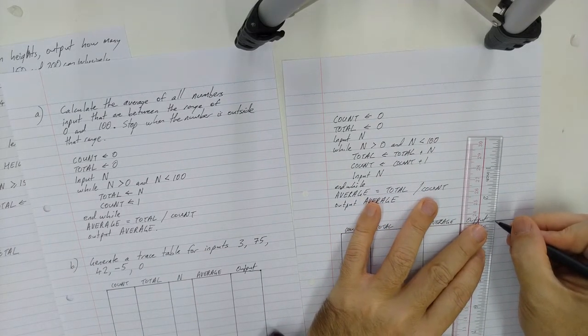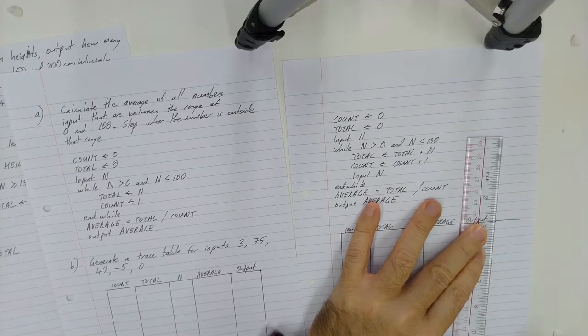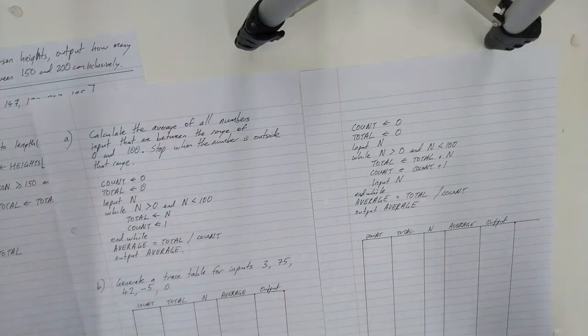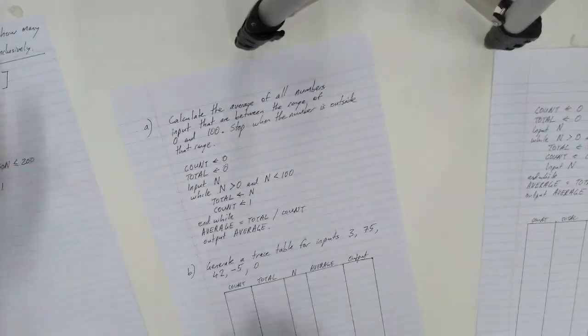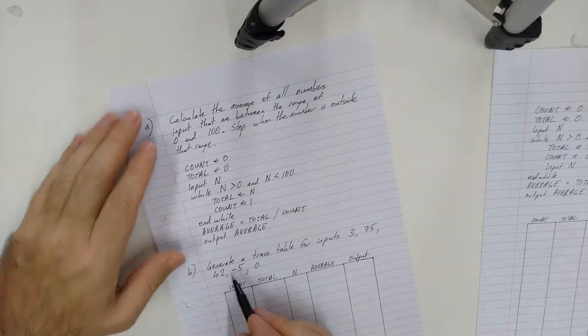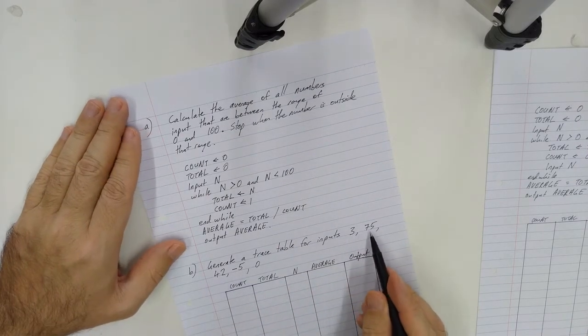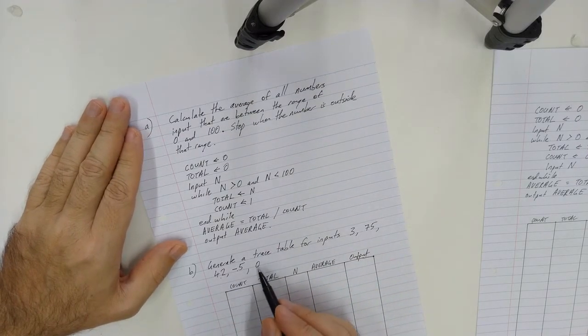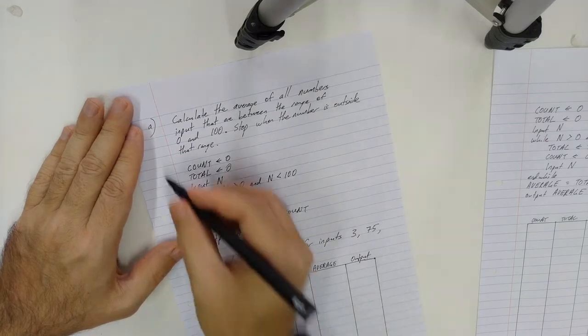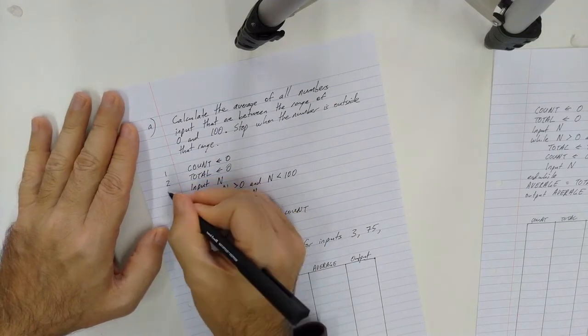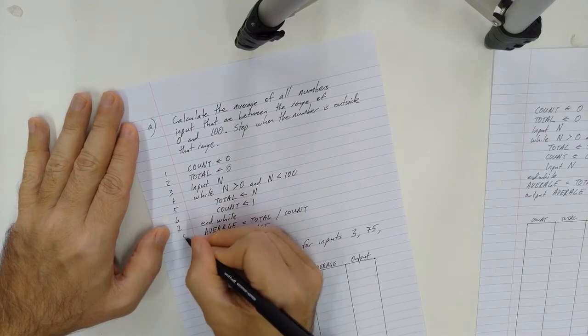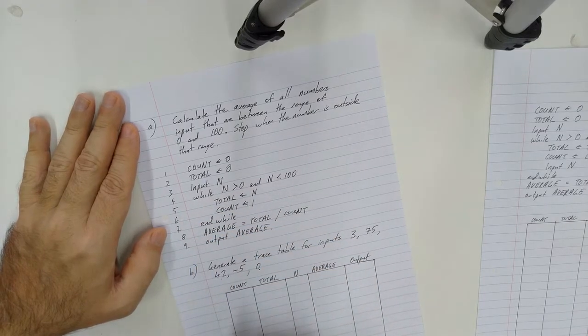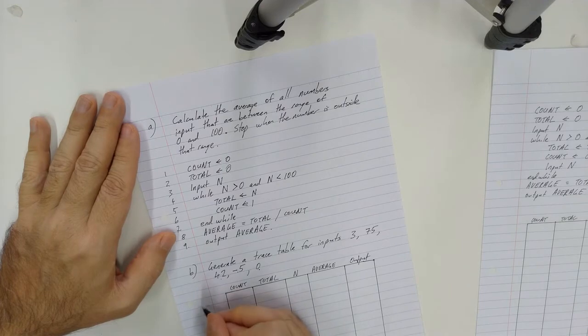Alright, we are basically manually doing the job of the computer and we go through our algorithm line by line until the algorithm finishes. Alright, so it can be a little tedious, but it is a failsafe to test algorithms. So let's start with the one that doesn't work. Generate a trace table for the inputs 3, 75, 42, negative 5, 0. So the first thing, I might quickly come up here and number my lines.